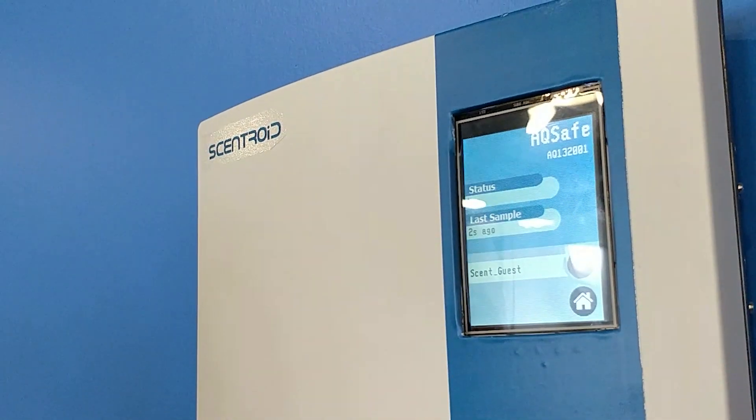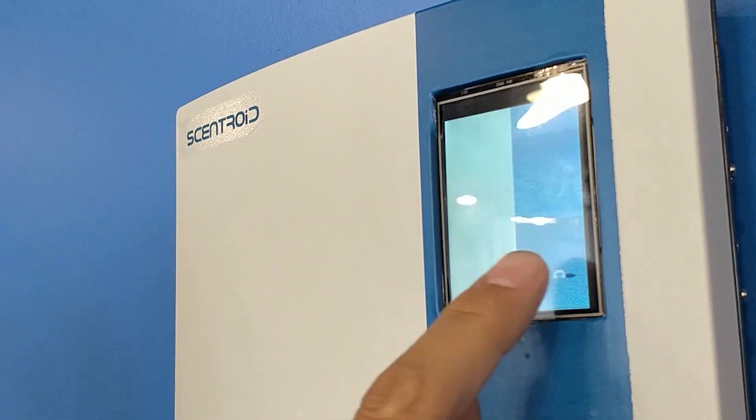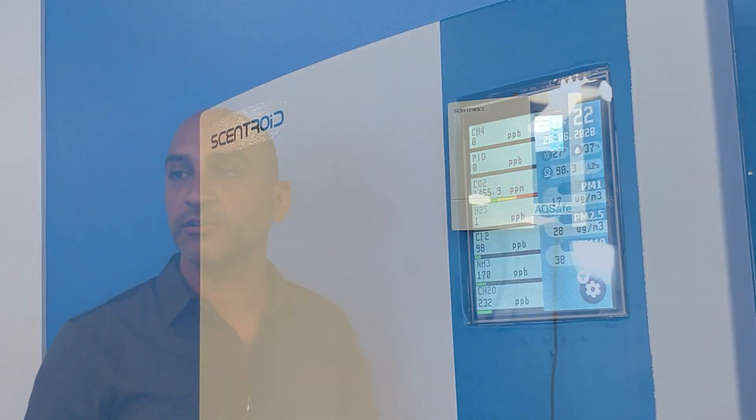Here is our AQsafe. It does a complete reading of the sensors every minute. We're monitoring particulate matter PM1, 2.5, and 10, as well as temperature, relative humidity, and barometric pressure.